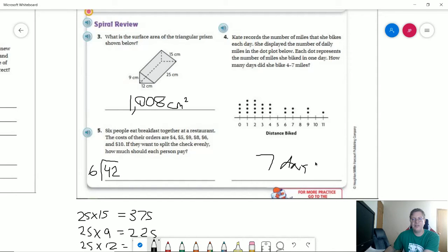And number five, we can do 42 divided by six. So we add all this together. We get $42 divided by six gives us $7 per person.